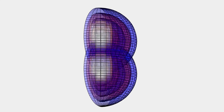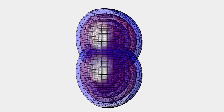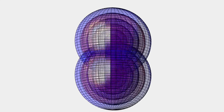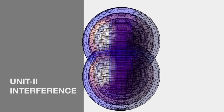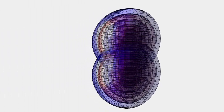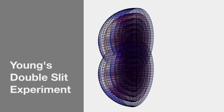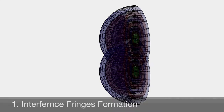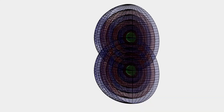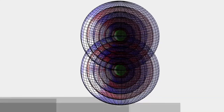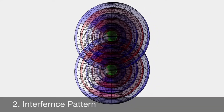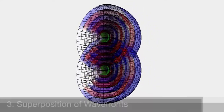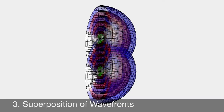Hello everyone, welcome to the second topic on this unit: interference. This is called Young's double slit experiment. From this experiment we can understand the interference fringes formation, the interference pattern, and also we will see the analogy of the superposition of wave currents.